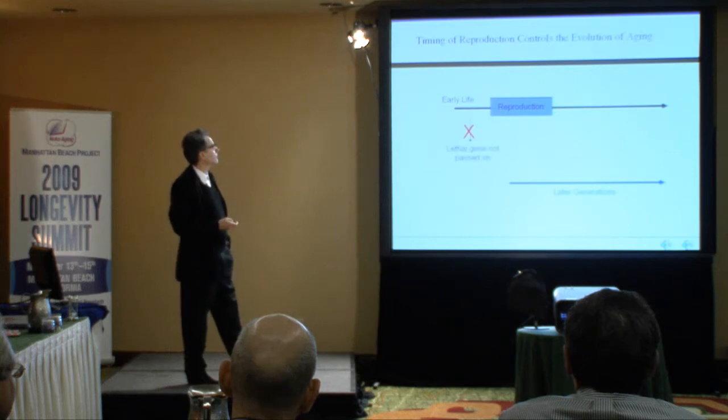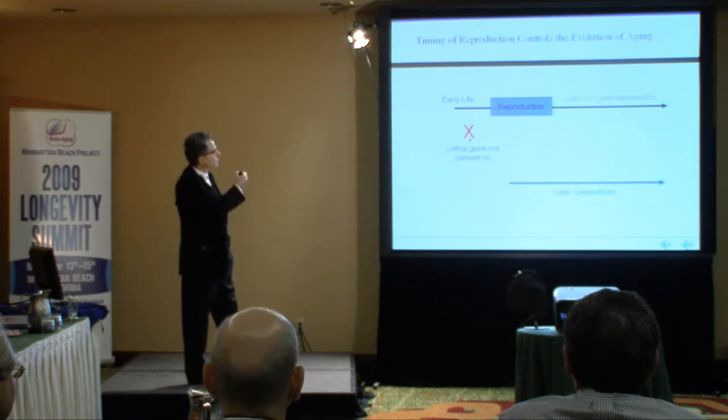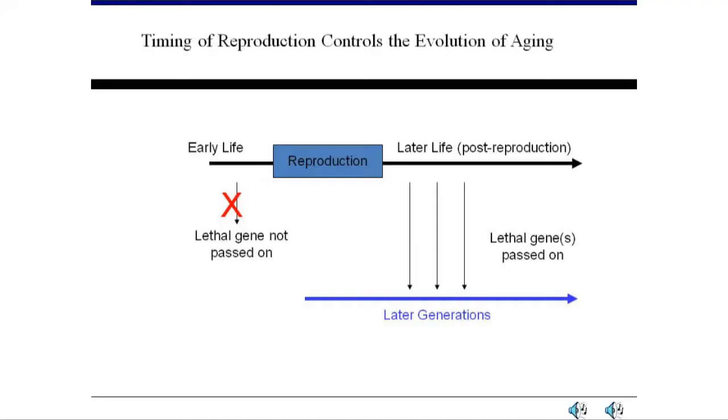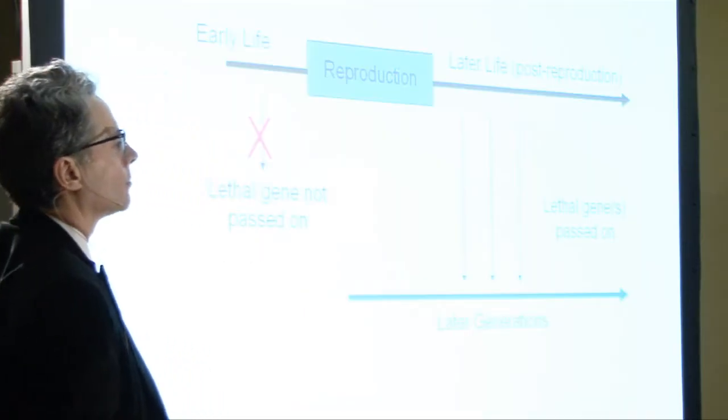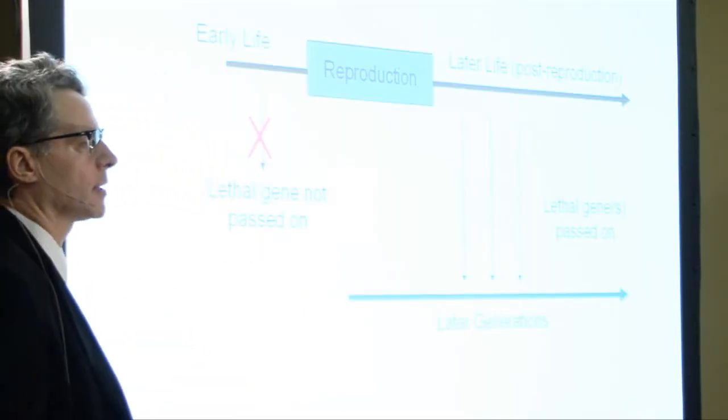The timing of reproduction controls the evolution of aging. Basically, if a gene is going to kill you with certainty and it kills you before reproduction, natural selection will completely clean it out. After the last stage of reproduction, if a gene will kill you with complete certainty, natural selection doesn't care, and things get ugly. In between, you have that smooth transition, which mathematically we are all experiencing — that is aging.